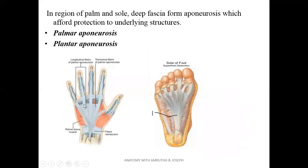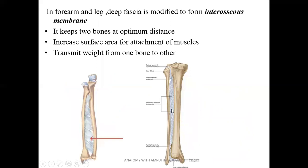In some areas like the palm, it thickens to form the palmar aponeurosis, and in the sole as the plantar aponeurosis. When two bones come close to each other, as in the leg and forearm, the deep fascia thickens in between the bones to form the interosseous membrane — a modification of the deep fascia. It keeps the two bones at an optimal distance, provides an area for muscle attachment, and also transmits weight from one bone to the other.